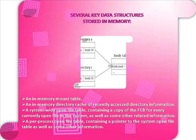Several key data structures are stored in memory: an in-memory mount table, an in-memory directory cache of recently accessed directory information, a system-wide open file table containing a copy of the FCB for every currently open file in the system, and a per-process open file table containing a pointer to the system open file table as well as some other information.